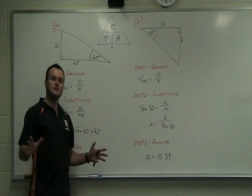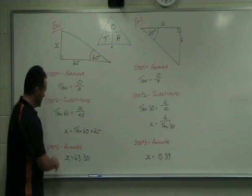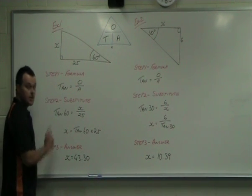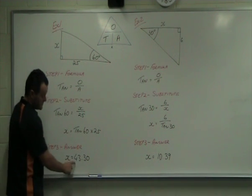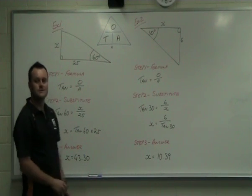You should be able to type that straight into your calculator and get the answer, which is step three answer, and you should come to 43.30.